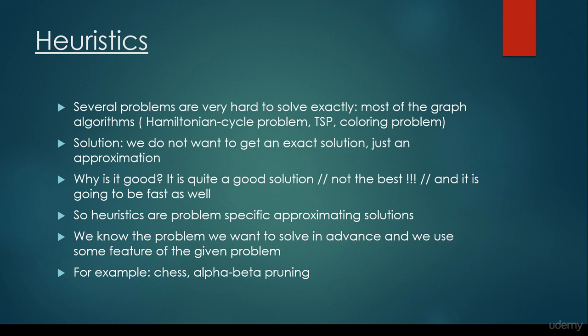The traveling salesman problem is basically very similar to the Hamiltonian cycle problem, because it's like we would like to visit every city on a given map and we would like to end up at the same city from where we have started, making sure that the route we take is going to be the shortest path possible. This is the so-called traveling salesman problem, or the so-called coloring problem. All of these problems are very complex — the so-called NP problems, non-deterministic polynomial problems.